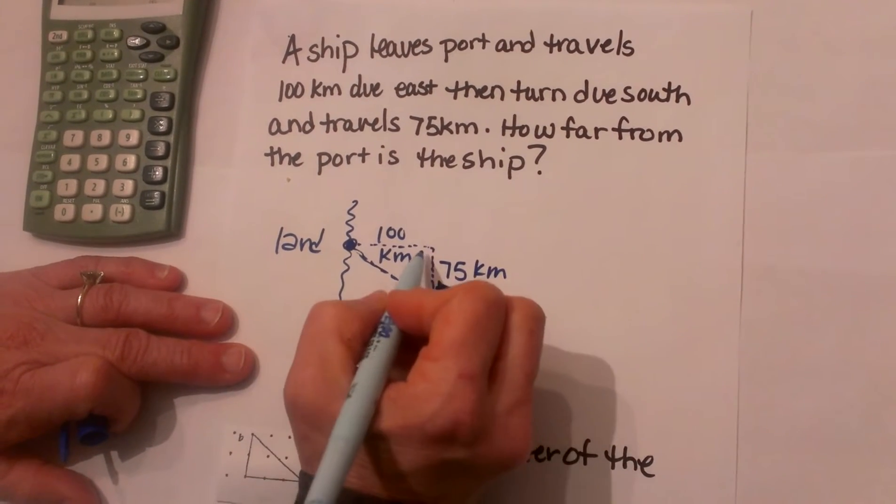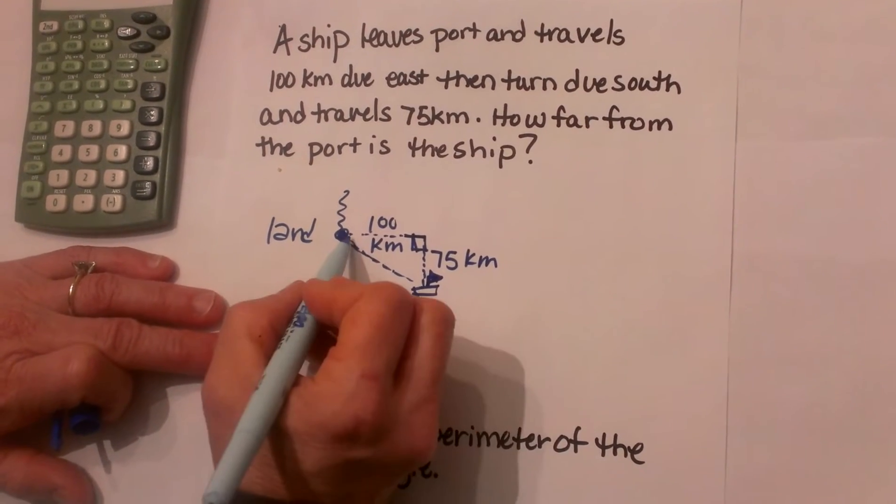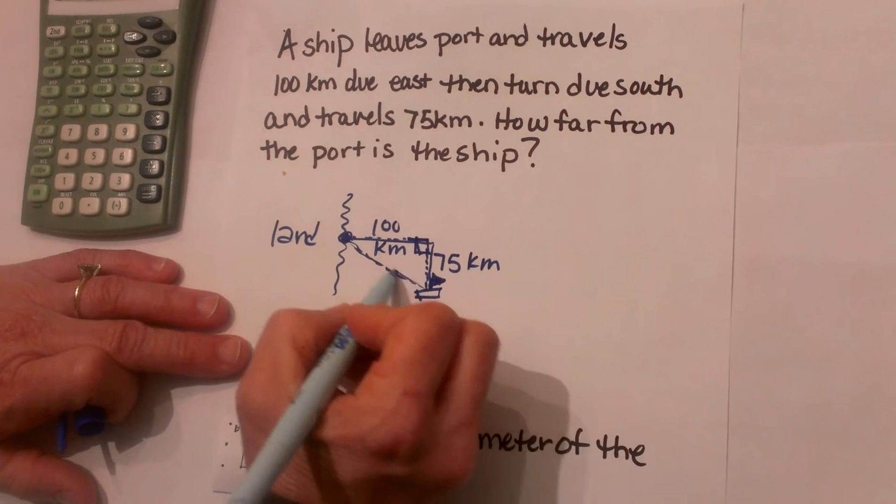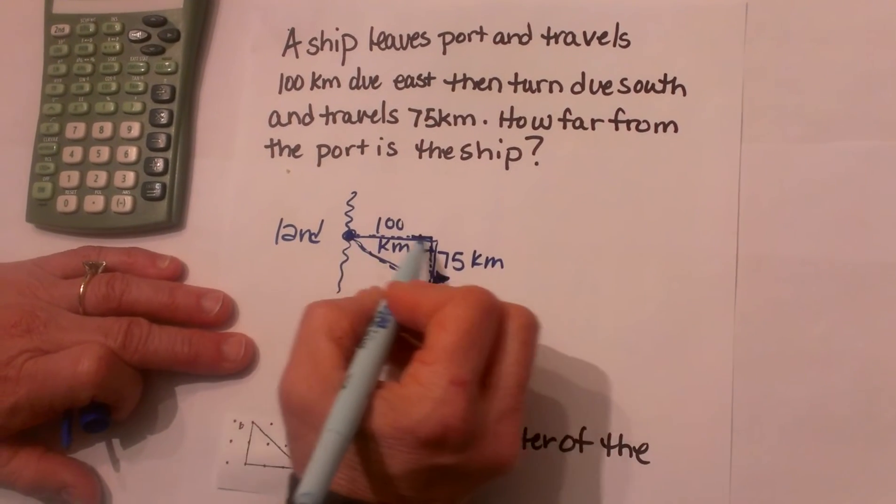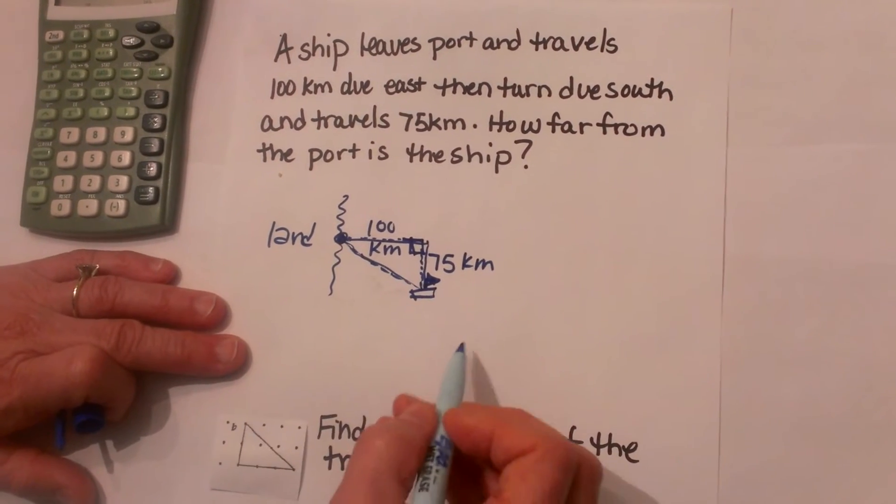So this is the diagonal distance. Here is my right angle where I turned. So now you can see we have a right triangle that measures 100 on one side and 75 on the other, and we have to find the hypotenuse.